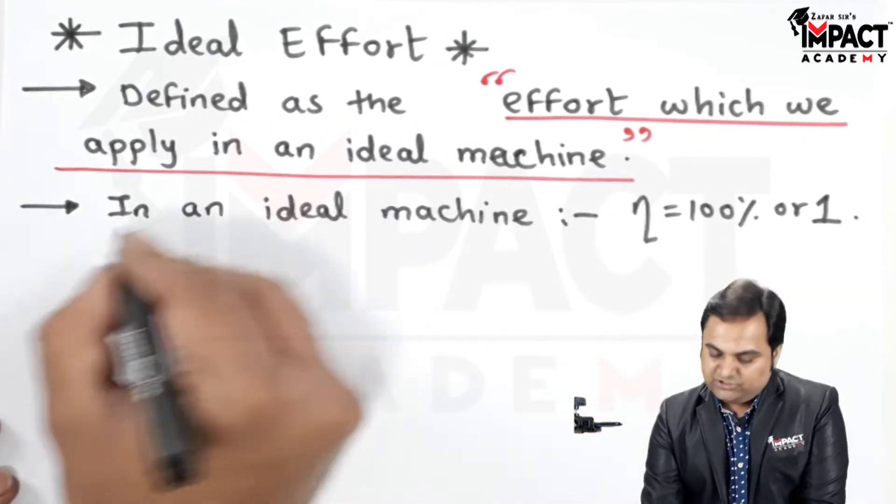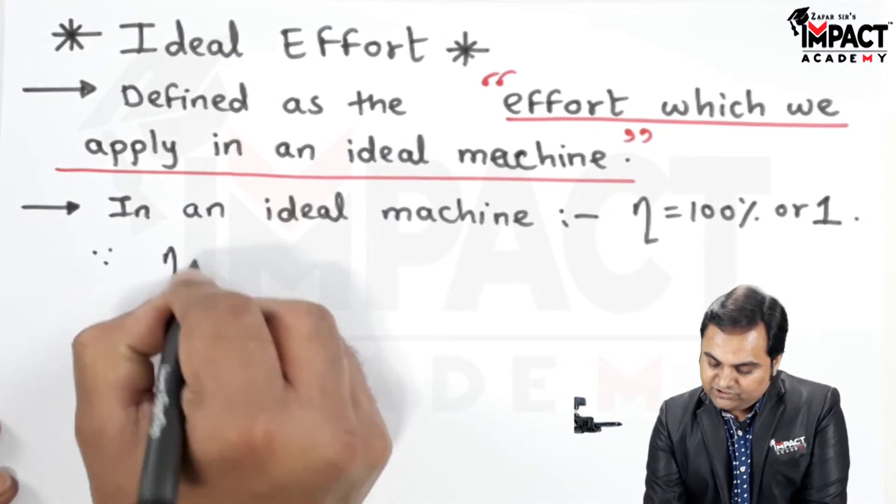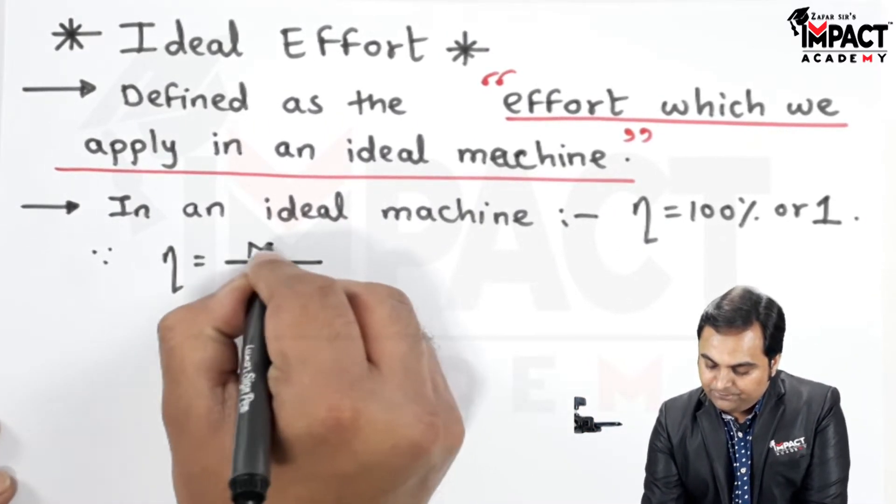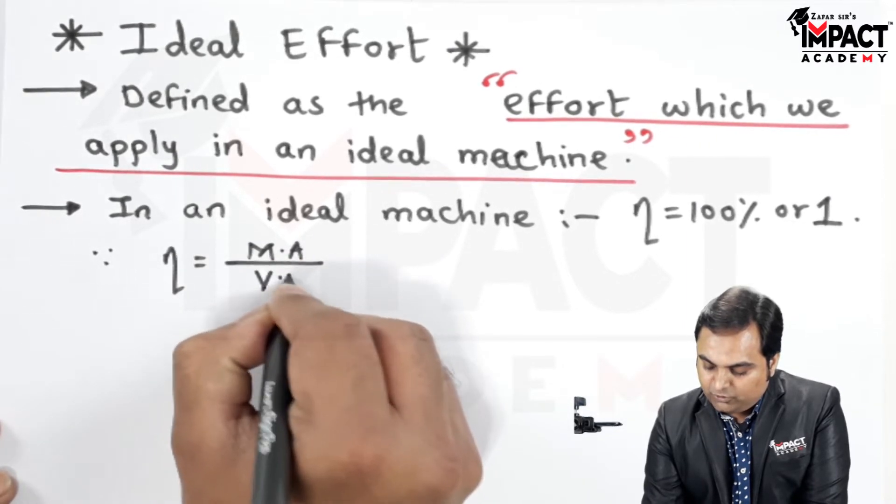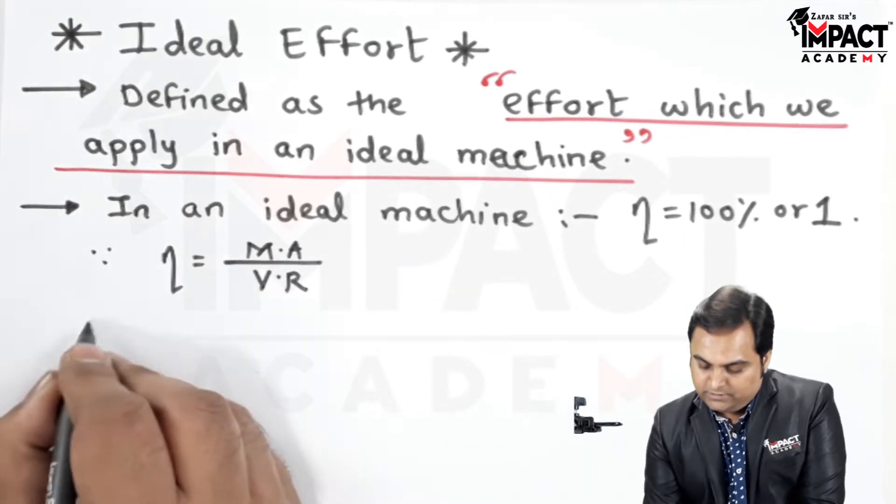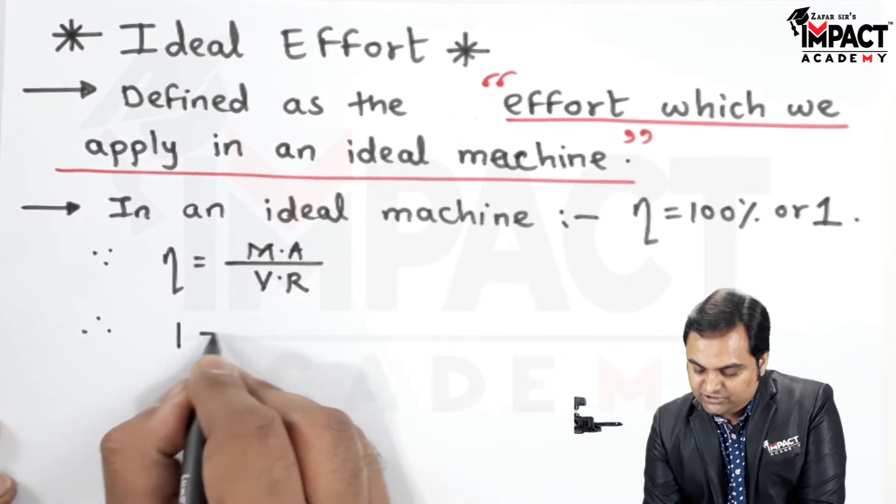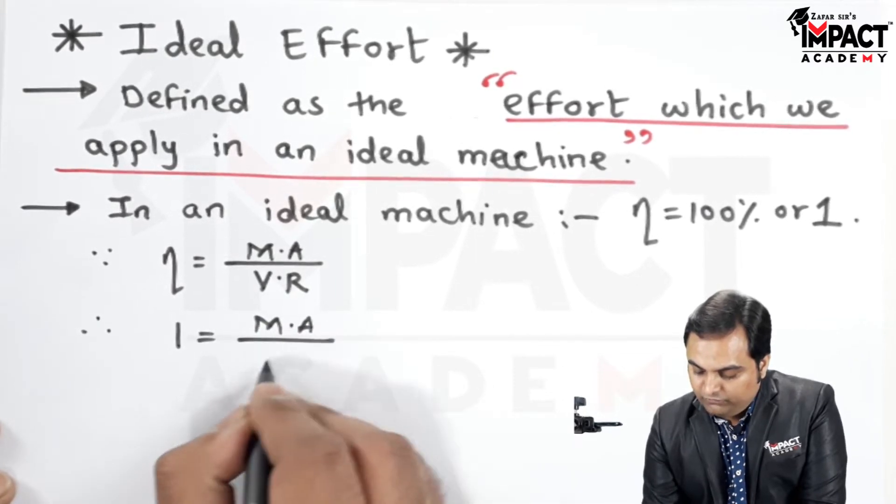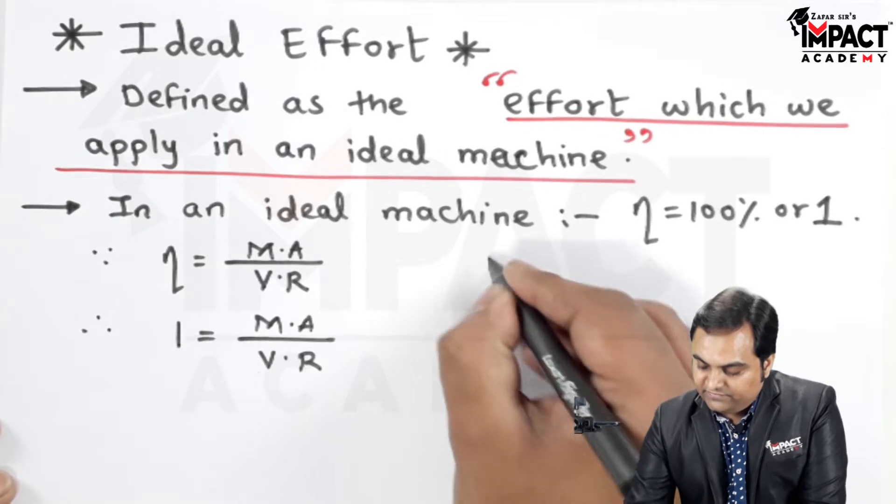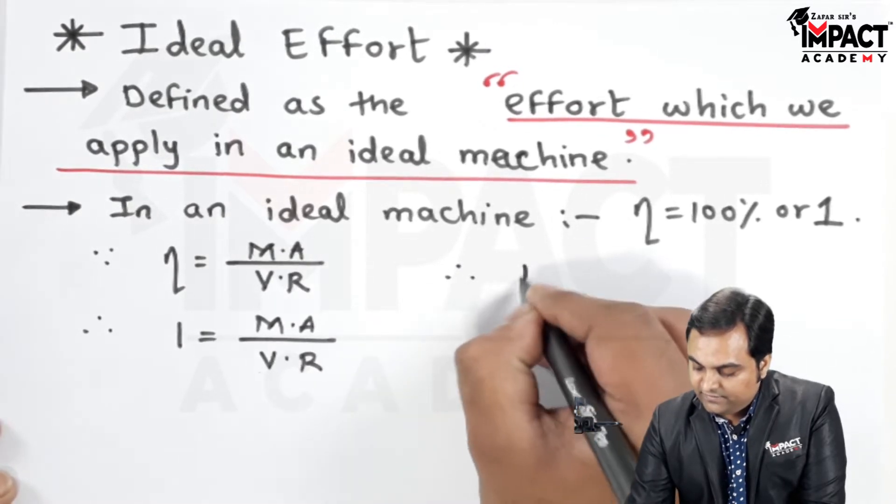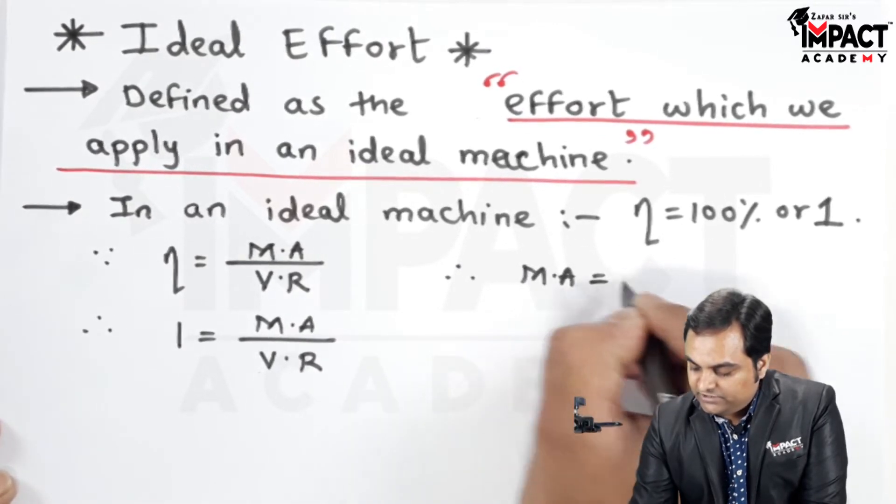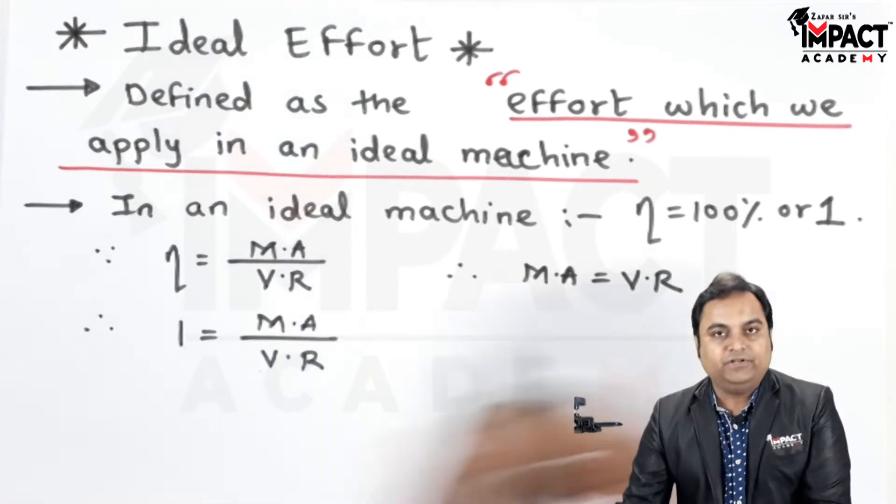In an ideal machine, since the efficiency is also given by mechanical advantage upon velocity ratio, and here the efficiency is 1 in terms of number, we can clearly see that if it is an ideal machine, the mechanical advantage is equal to the velocity ratio.